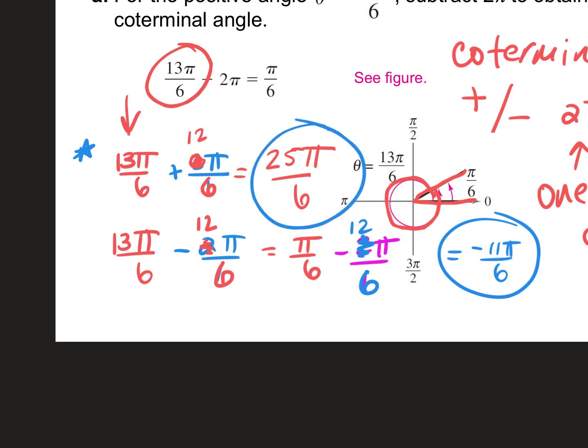If they ask you for two coterminal angles, whatever you need is fine. But if they ask you for one positive and one negative, you keep adding until you get a positive number and keep subtracting until you get a negative one. You can still do a positive and a negative even when they just ask for two.